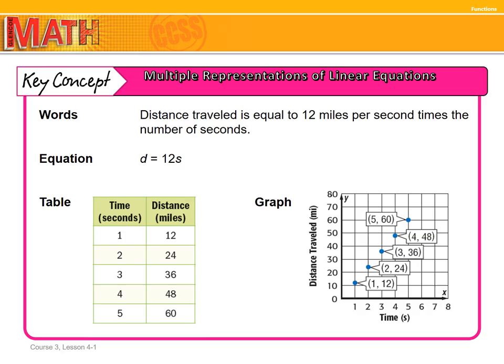In this screen, you'll see our key concept for this lesson, showing the multiple representations of linear equations. Linear equations can be in words. In this case, distance traveled equals 12 miles per second times the number of seconds. That can be written into an equation. Then we can put it into a table with time in seconds and distances: 1 second, 12; 2 seconds, 24; 3 seconds, 36; 4 seconds, 48; 5 seconds, 60. We got that from this equation, and then we can also graph each of these points. So we go from words to equation to table to graph.